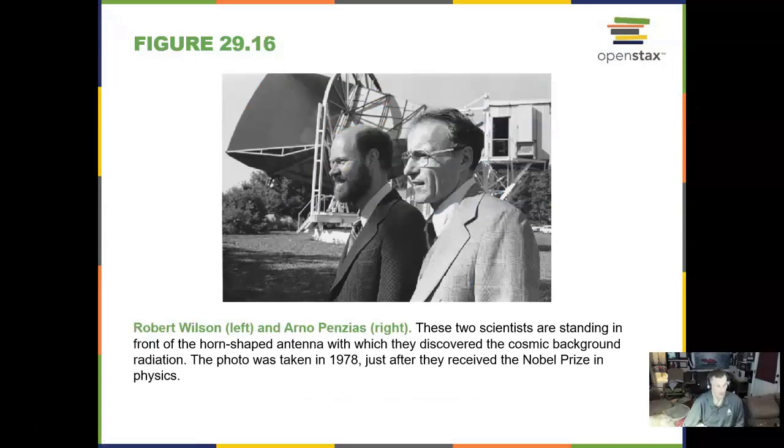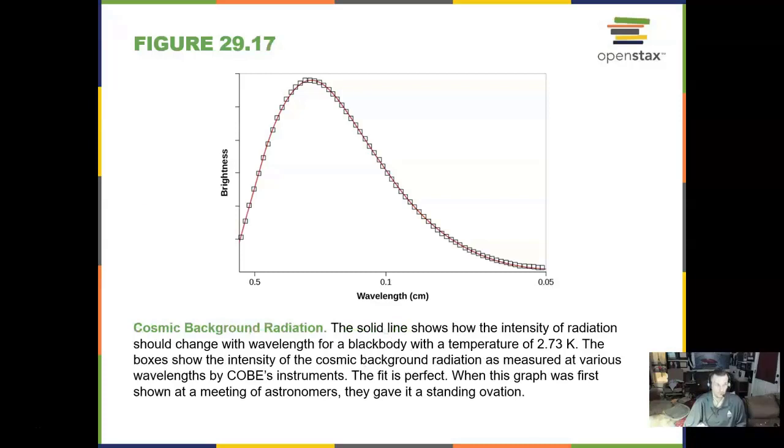All right. Robert Wilson and Arno Penzias. They are standing in front of the Bell Labs horn shaped antenna from which they discovered by accident the cosmic background radiation. And they received their Nobel Prize in physics for it. And that radiation has been measured, I was right, 2.73 Kelvin.